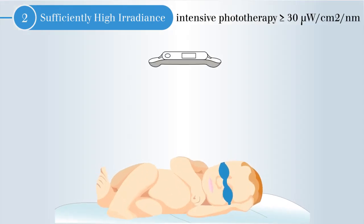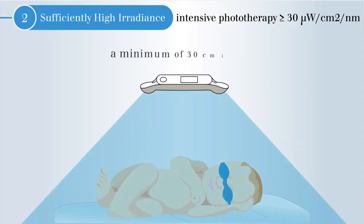The second consideration is sufficiently high irradiance. This is the power per area of light received by the neonate. To ensure maximum irradiance, the distance between the patient and light should be minimized.